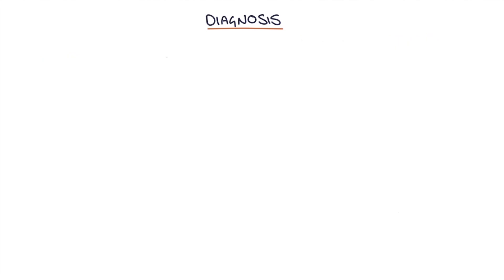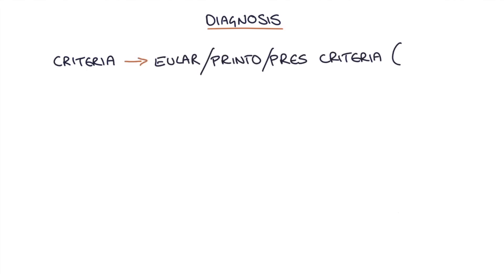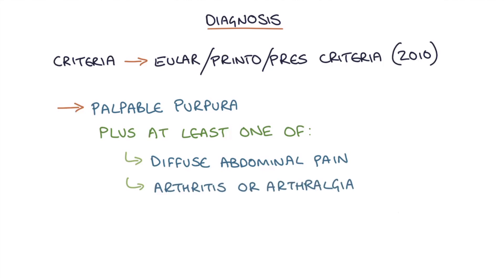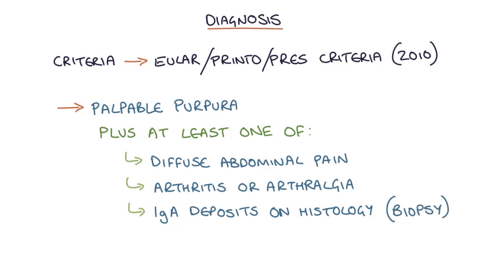There are many different sets of criteria for diagnosing HSP, the most recent being the EULAR/PReS criteria from 2010. These require the patient to have palpable purpura — not petechiae — plus at least one of: diffuse abdominal pain, arthritis or arthralgia, IgA deposits on histology (involving a biopsy), or proteinuria or haematuria.